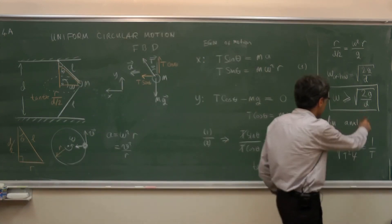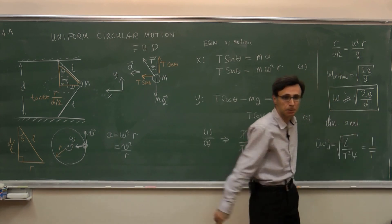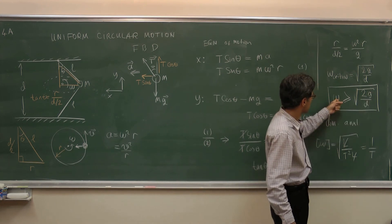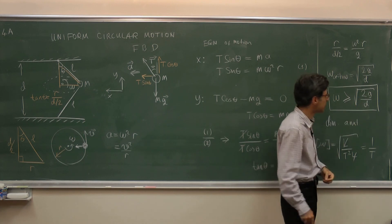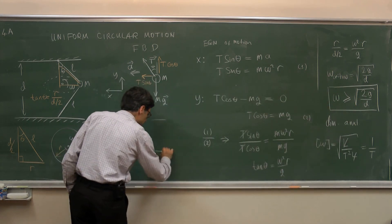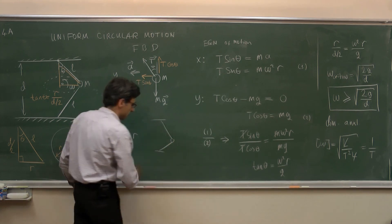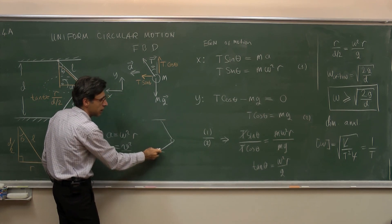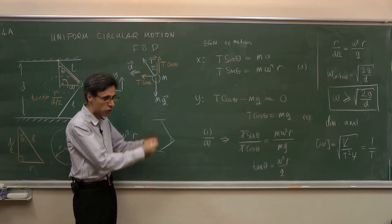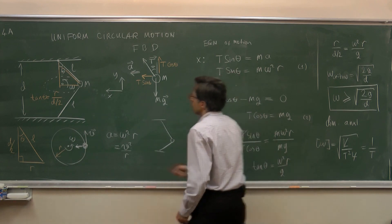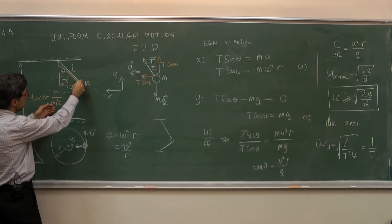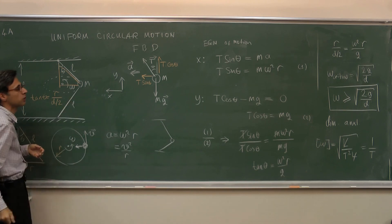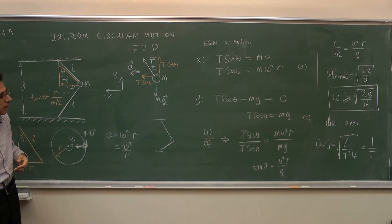Does it make sense? Consider doing the same experiment in space where g = 0: the critical speed becomes zero, meaning even without rotation the lower string stays straight — which makes sense. On a planet where g is large, the weight pulls the mass down more strongly, making theta smaller, so we need to rotate faster to increase the centripetal force and correct that. This all makes sense, and that is our final answer.